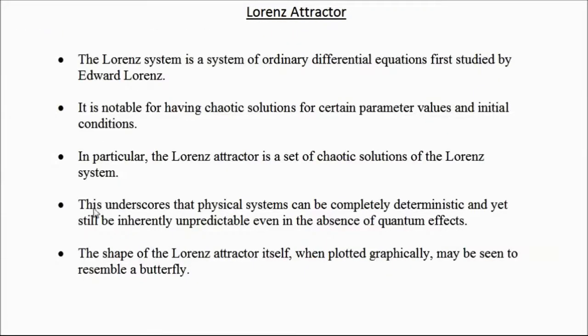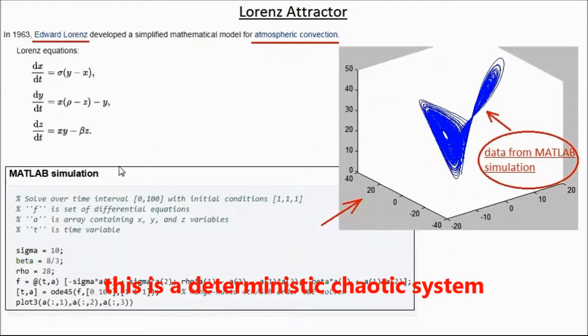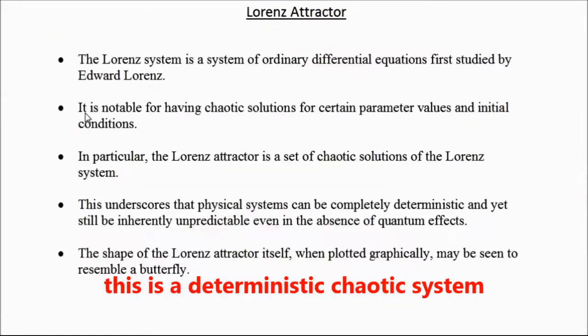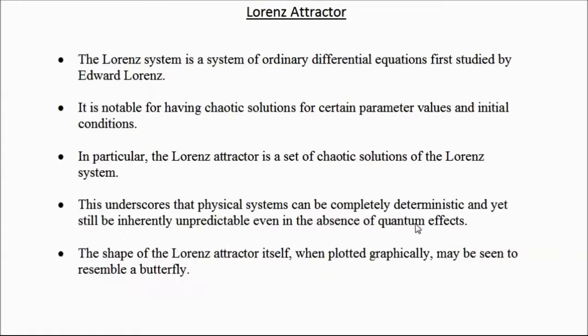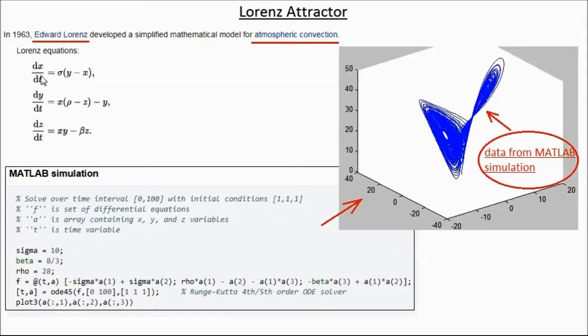This underscores that physical systems can be completely deterministic and yet still be inherently unpredictable, even in the absence of quantum effects. So there is no randomness anywhere, and there is no chaotic system influencing these equations, but still the equations behave like random systems, but they are not actually random systems. They are chaotic systems. So there is a choice of parameters for which the solution to this coupled nonlinear equations produces chaotic solutions.